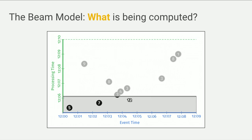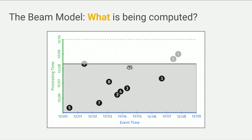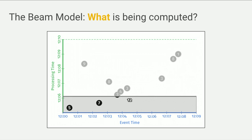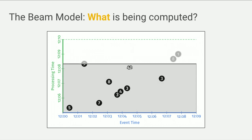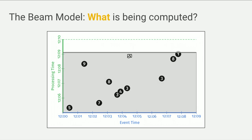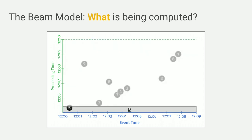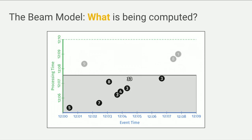If we simulate how this line of code would execute — as processing time goes on, we encounter elements, the system learns about them, accumulates a sum, and once all things are done, it outputs the result: 51 in this case. Very simple, standard batch processing over a large amount of data.